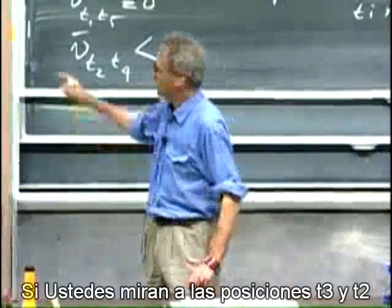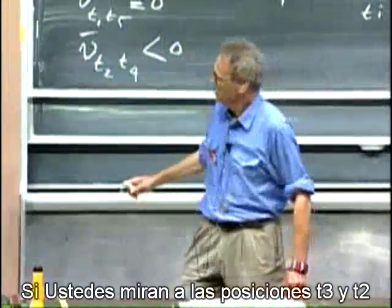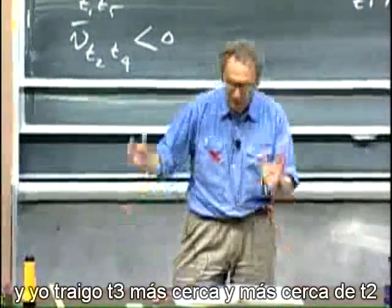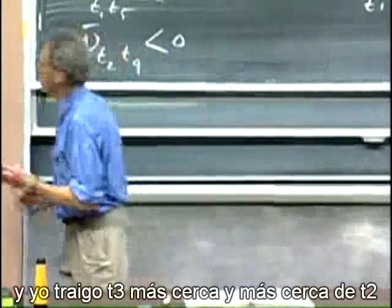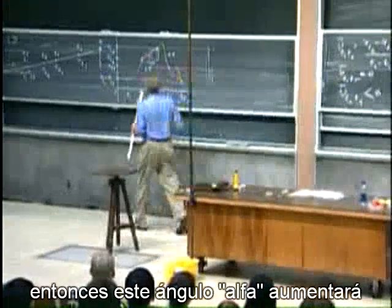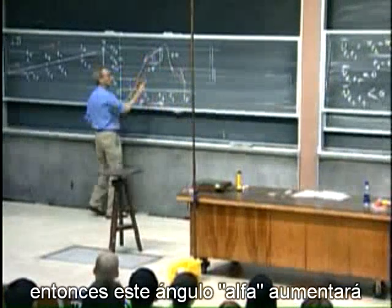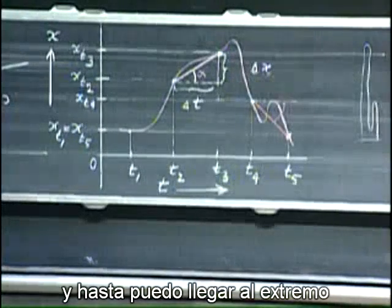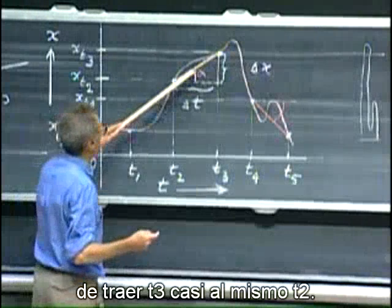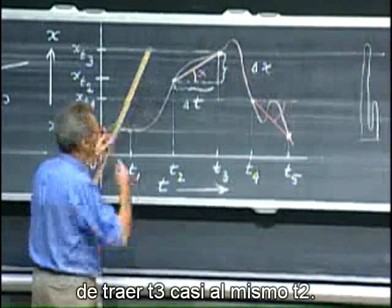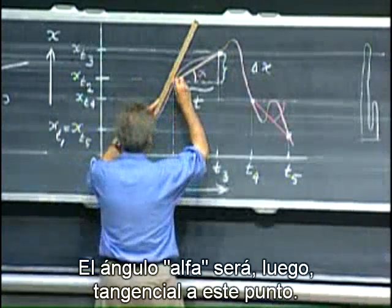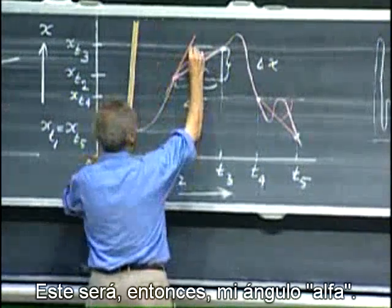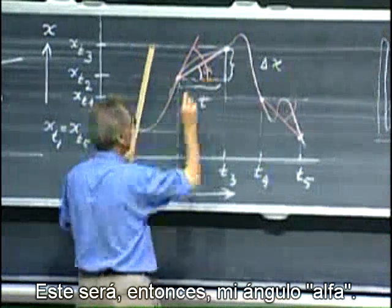If you look at the location t3 and t2, and I bring t3 closer and closer to t2, then this angle of alpha will increase. And I can go to the extreme that I bring t3 almost right at t2. The angle of alpha will then be tangential to this point. This will then be my angle of alpha.